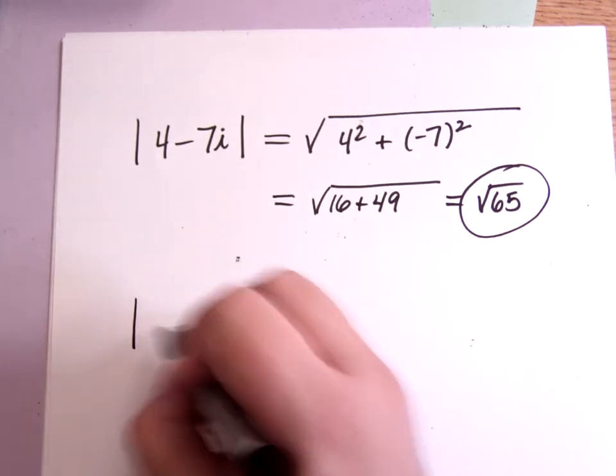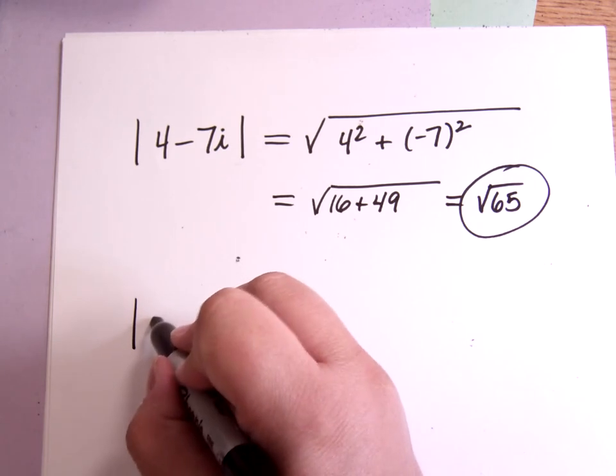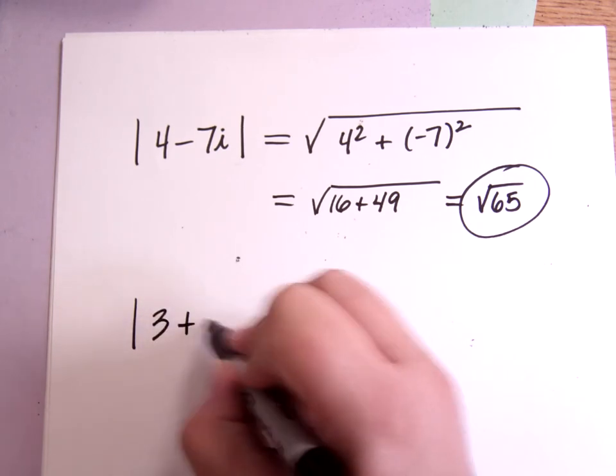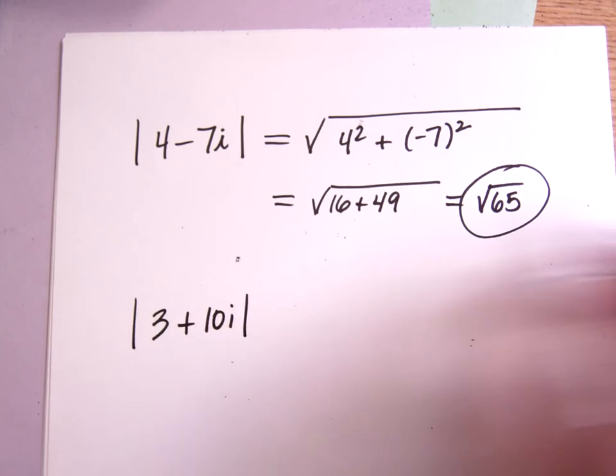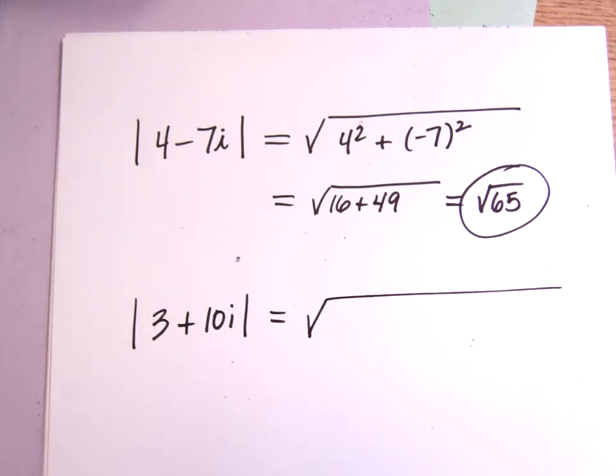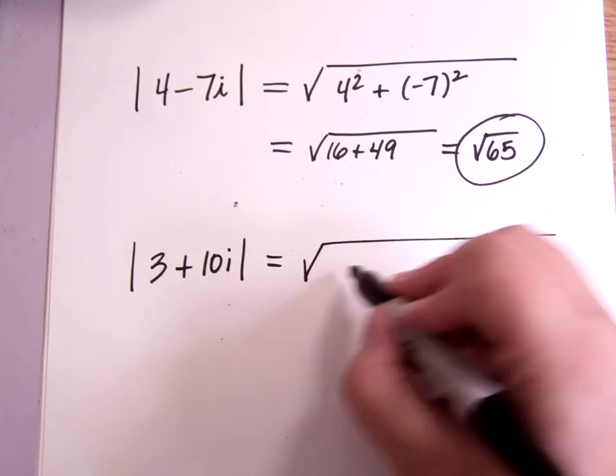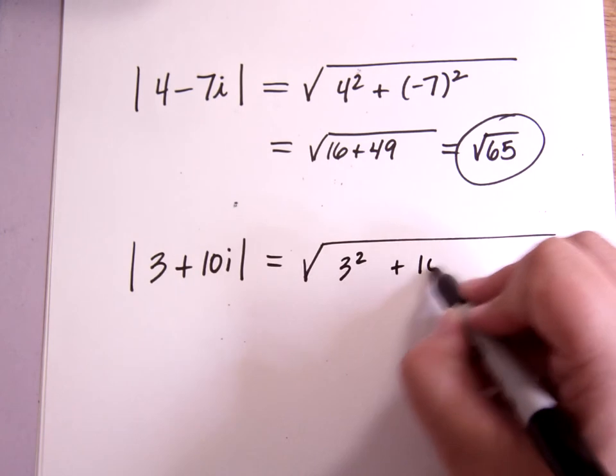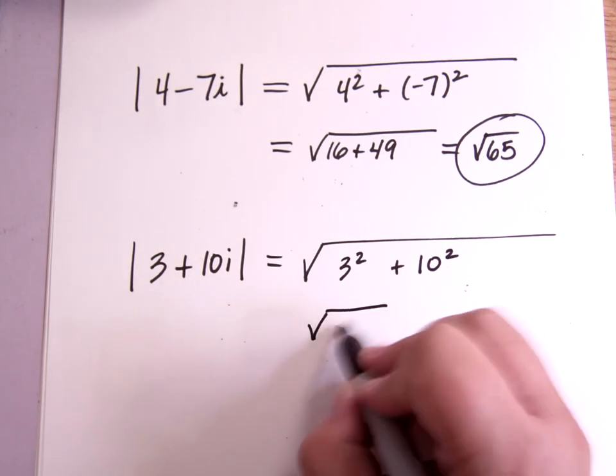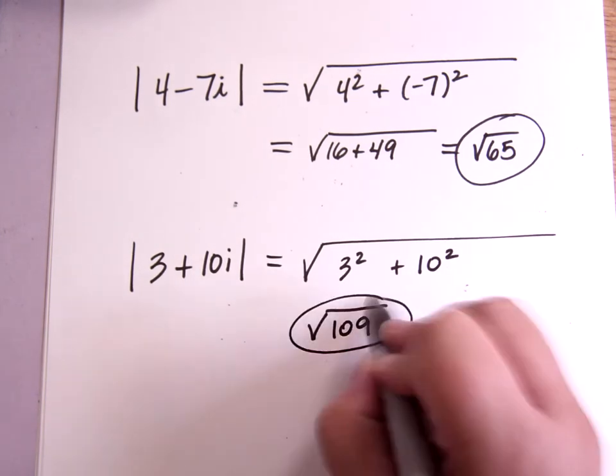So absolute value of 3 plus 10i. And remember, when you're watching a video, you can go ahead and pause at any time and try something yourself. That would be 3 squared plus 10 squared, which is square root of 109, and I believe that's as simple as it gets.